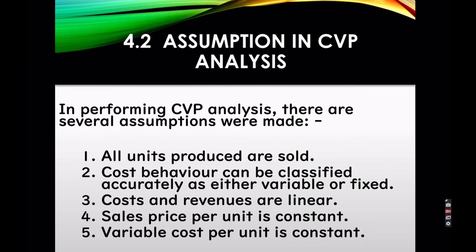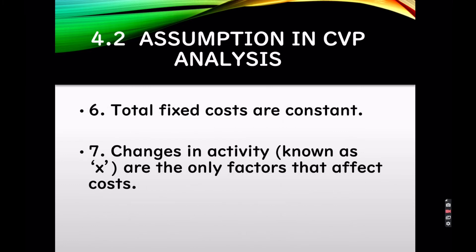Assumptions in CVP Analysis: In performing CVP Analysis, there are several assumptions made. 1. All units produced are sold. 2. Costs' behaviour can be classified accurately as either variable or fixed. 3. Costs and revenues are linear. 4. Sales price per unit is constant. 5. Variable cost per unit is constant. 6. Total fixed costs are constant. 7. Changes in activity, known as X, are the only factors that affect cost.